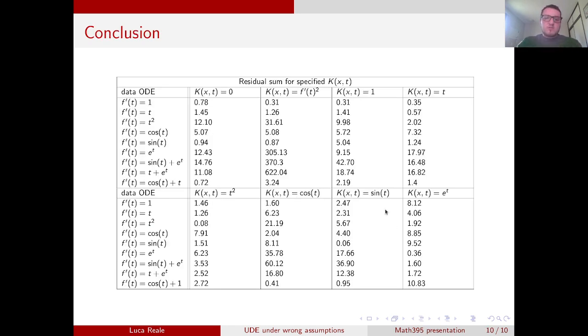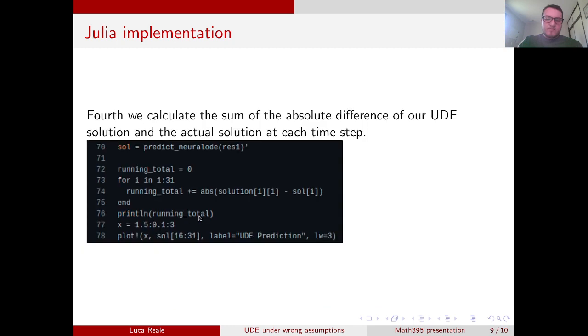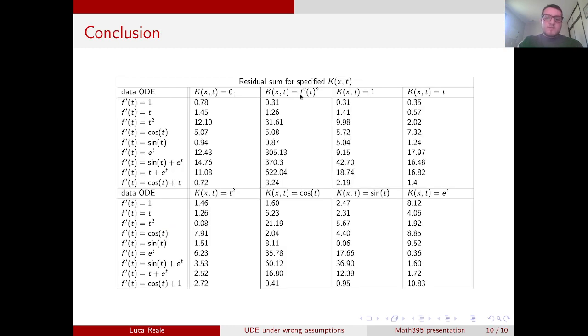So what conclusion did we reach? In this graph here, we have our data ODE. This is the data from which we generated our red dots, our data with which we trained our neural network. And here we have our different specifications. So as you can see, when your specification is equal to the data ODE, you get the smallest error, the best model performance. Another example is at sine of t, we get a very good model performance, a very small residual sum of 0.06.